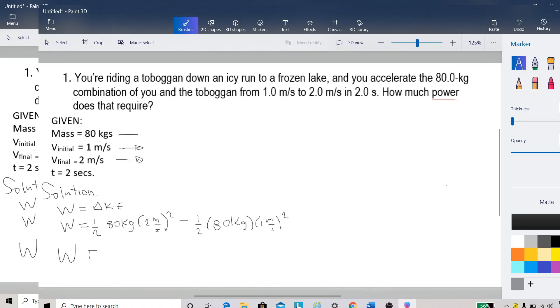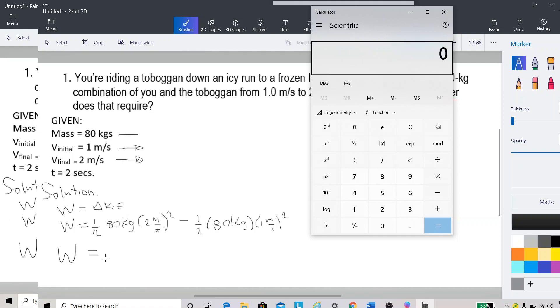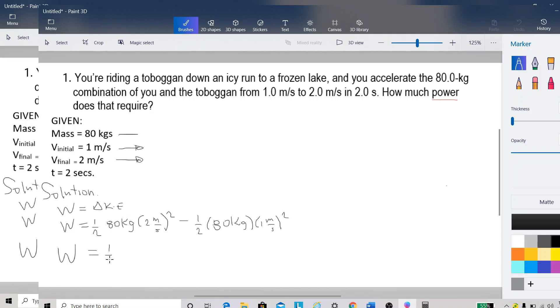So W will be, let's try to factor out. We have 80, one half times 80, and then we will have this one, two squared minus one squared. So that will be equal to 40 times 3, that will be 120.